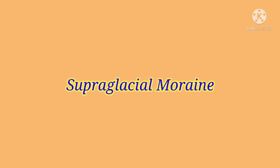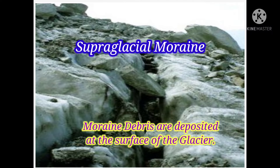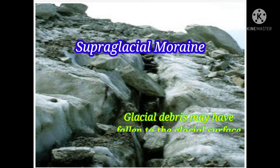Let's know about supraglacial moraine. When a moraine forms on the surface of the glacier, it is called a supraglacial moraine. Supraglacial moraines are formed due to deposits of dirt and debris which may have fallen onto the surface of the glacier from the surrounding area.